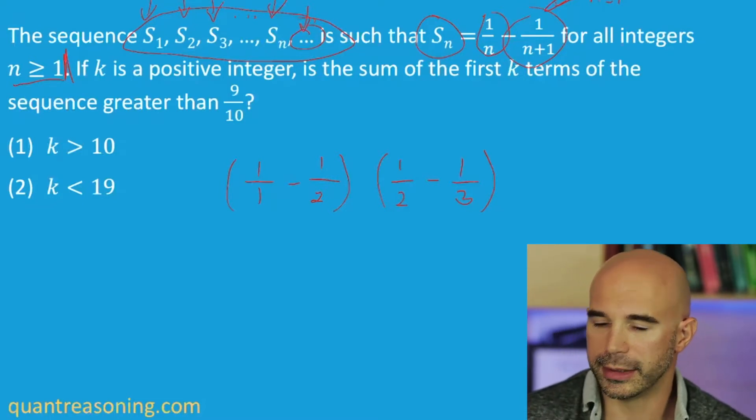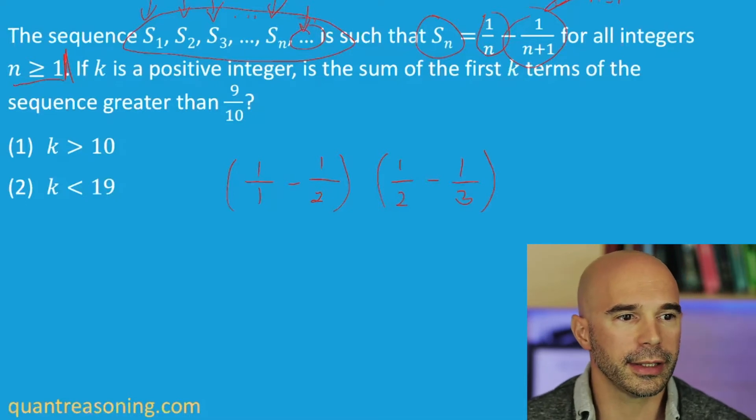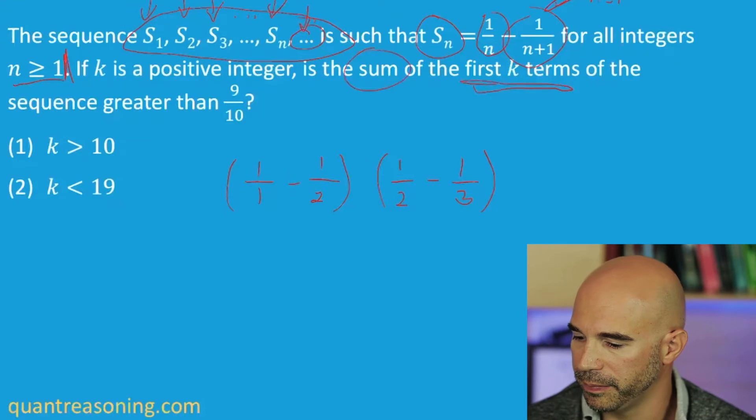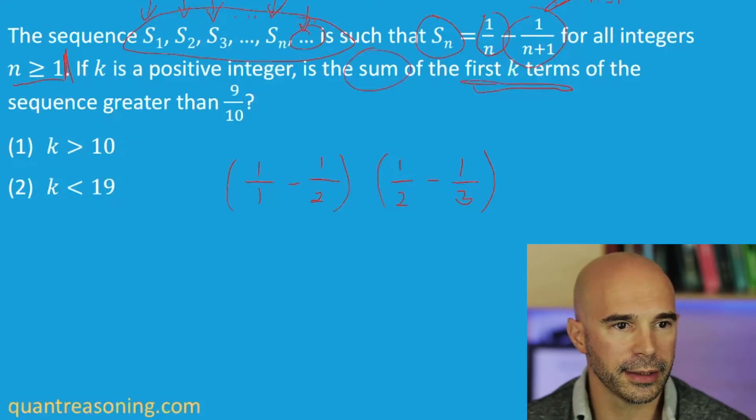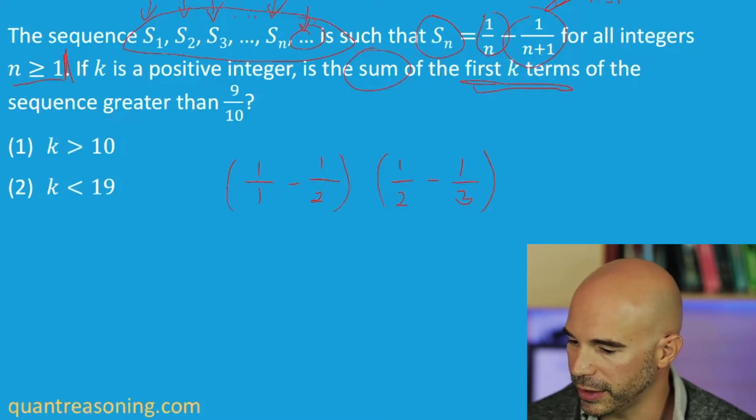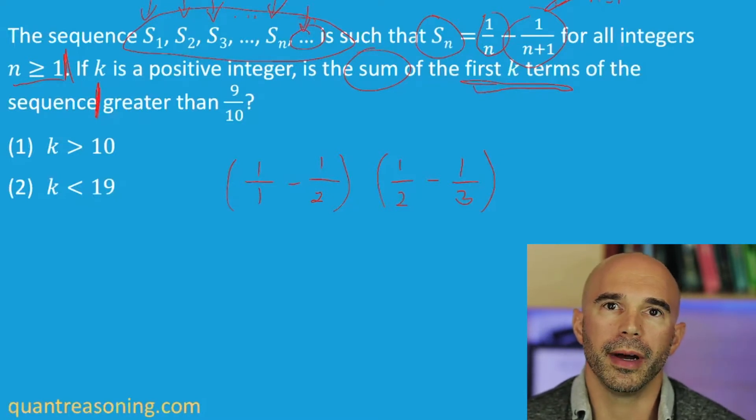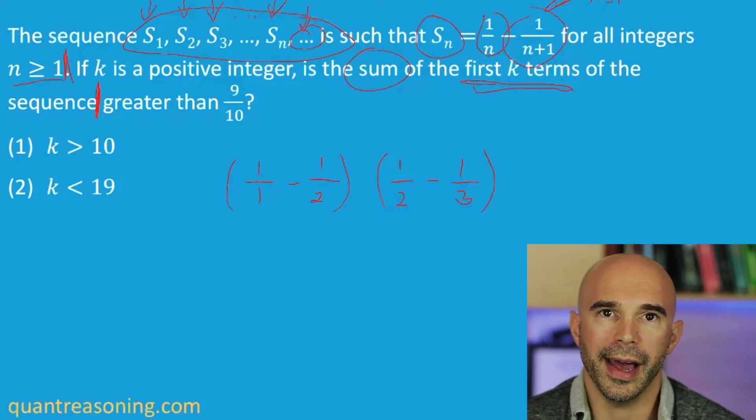So I'm ready to keep reading. It says, if k is a positive integer, is the sum of the first k terms, so we're talking about the sum of the first k terms, is that sum? I want to pause there. I guess I'd pause here after the word sequence. I want to pause again.